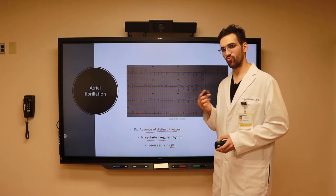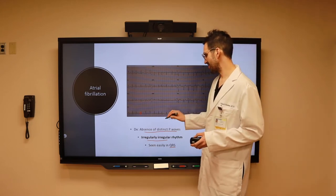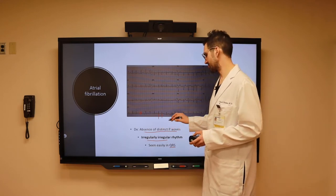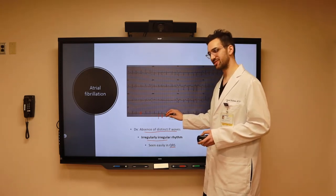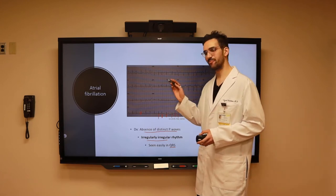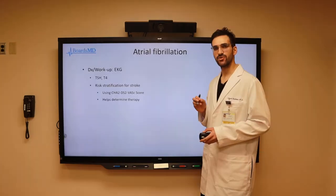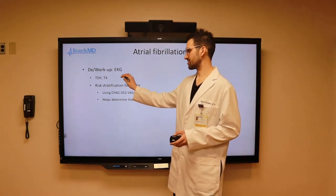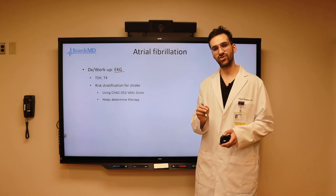Additionally, these patients are going to have an irregularly irregular rhythm. We don't necessarily need to whip out the calipers to note this, but the distance between QRS complexes varies throughout the entire strip — completely different intervals from one complex to the next. This irregularly irregular pattern is highly characteristic of an EKG in a patient with atrial fibrillation. So in patients with suspected AFib, we should obtain an EKG to note the characteristic lack of P waves and irregularly irregular rhythm.